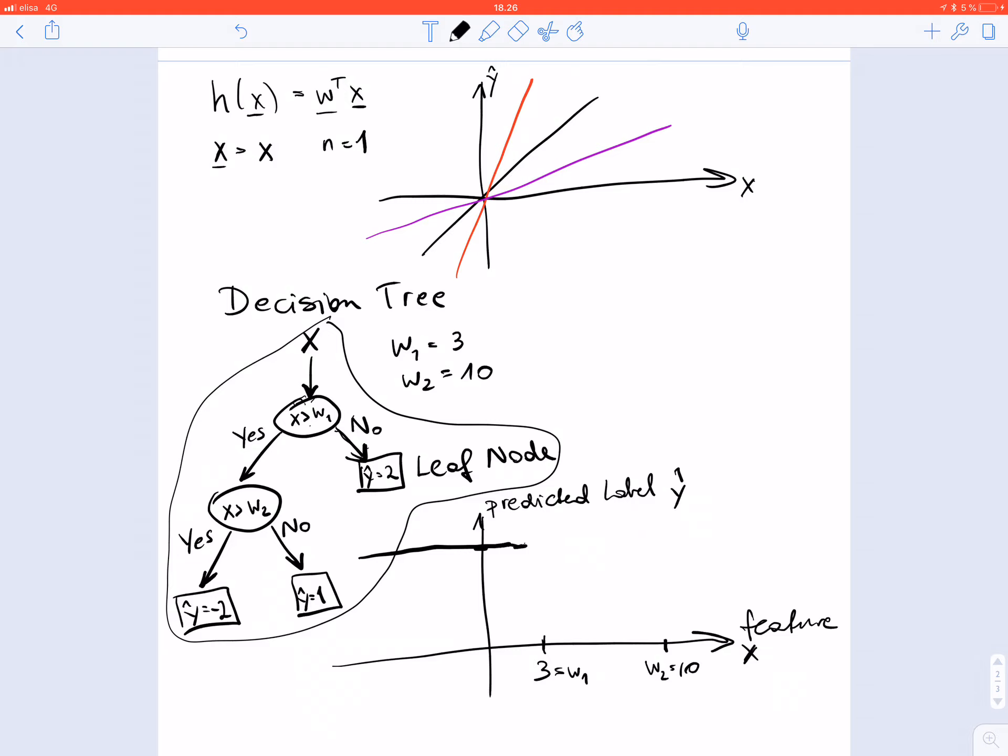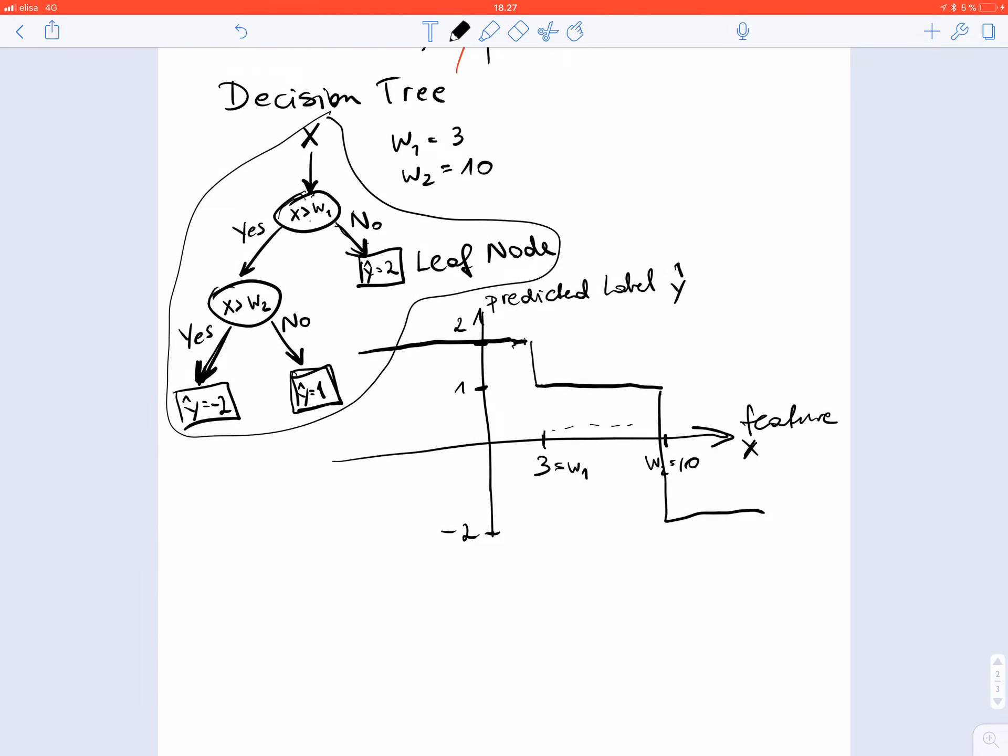If x is larger than w1 but not larger than w2, this is this area here, we obtain this leaf node which means we set y hat equal to 1. Then there's this leaf node where x is larger than w1 and larger than w2, which gives us y hat equal to minus 2. The set of all such nonlinear predictor maps is obtained by varying w1 and w2, giving us a space of nonlinear predictor maps.